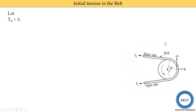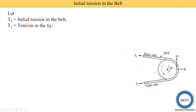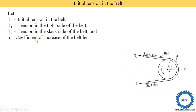Now we find the equation for initial tension. We need to understand a few basic parameters. T0 is the initial tension in the belt. T1 is the tension in the tight side of the belt. T2 is the tension in the slack side of the belt. Alpha (α) is the coefficient of increase of belt length per unit force — meaning if we apply a unit force on the belt, its length increases by a certain amount.